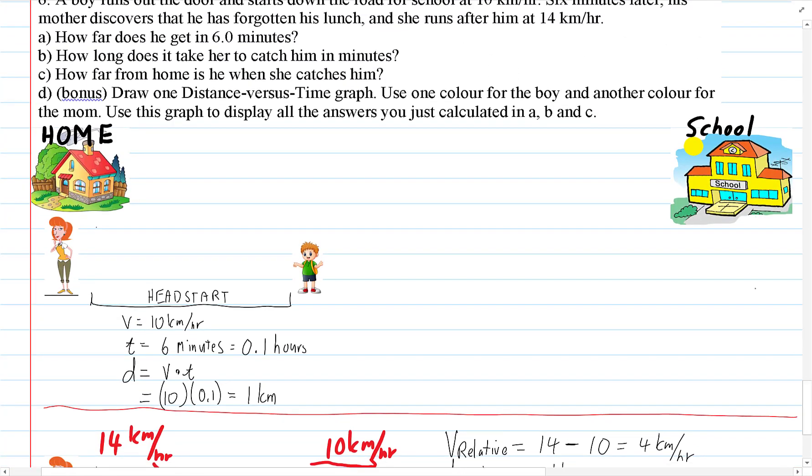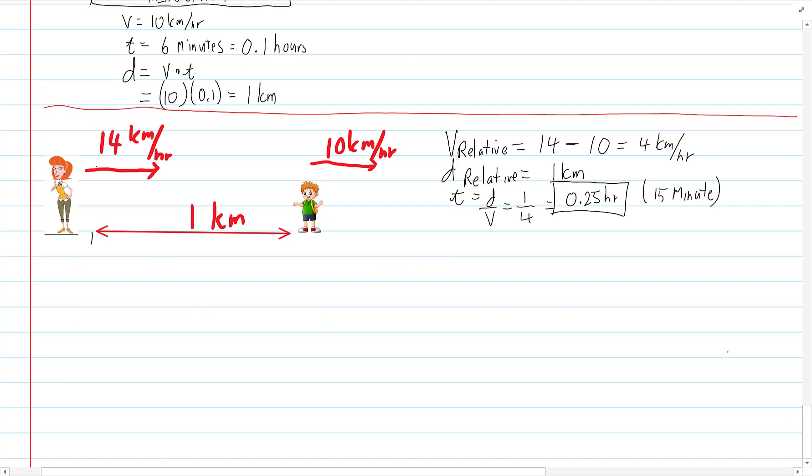And now to go back to the question. We know how many minutes. How far does he get is one kilometer. How far from home is he when she catches him? I like this. So when they do catch up, not mustard, but when they catch up, she is going to be... He's gone over here and she's caught. They both started here. And they both met there.